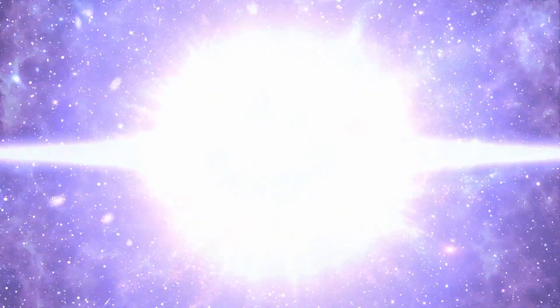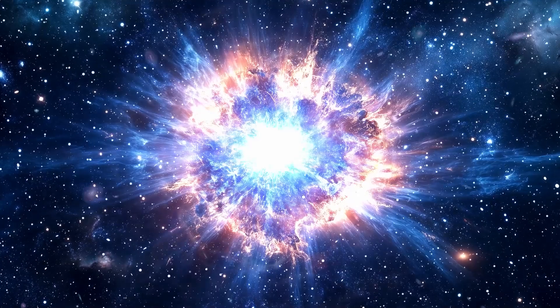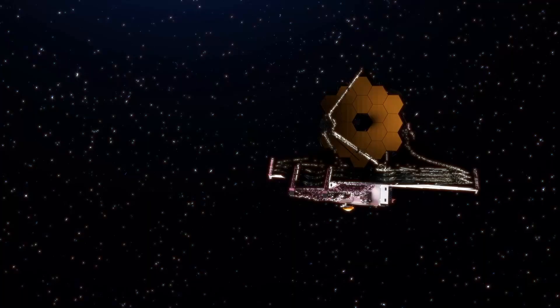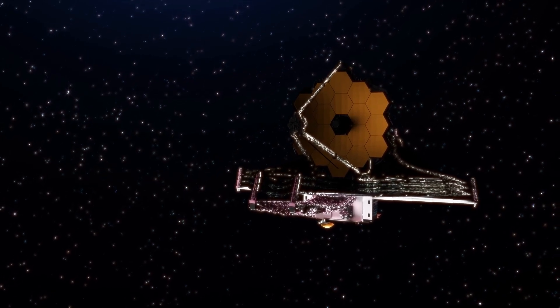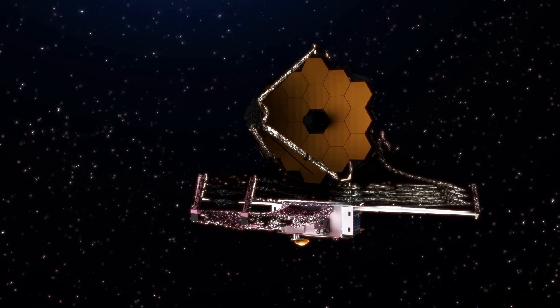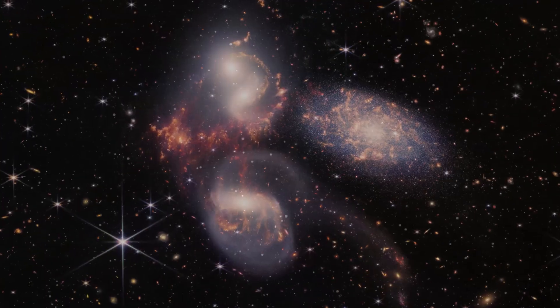This is called bounce cosmology, and it solves a lot of problems. It avoids the singularity, it explains where the energy for the Big Bang came from, and now, with the JWST's galaxy spin findings, it might even account for the directional imprint we're seeing in deep space. In short, the theory is no longer just theoretical.